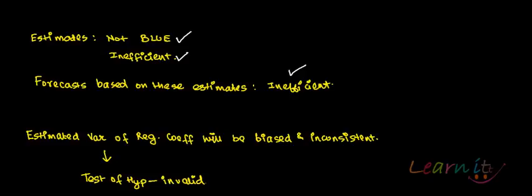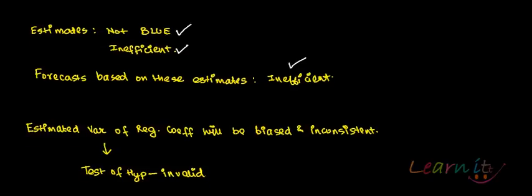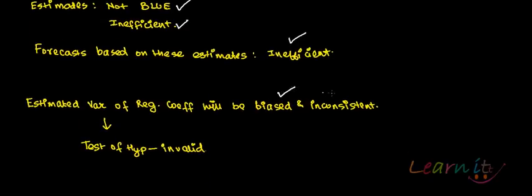If we look at the estimated variances of the regression coefficients, they will also be biased and inconsistent. And because these variances are biased and inconsistent, the test of hypothesis is going to be invalid.